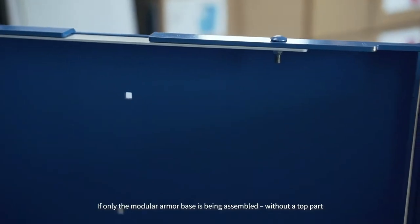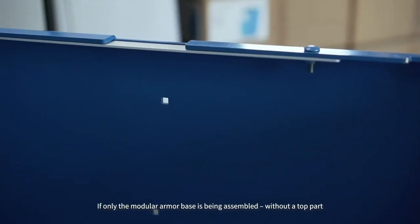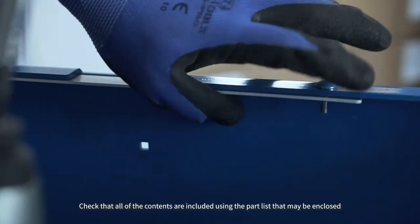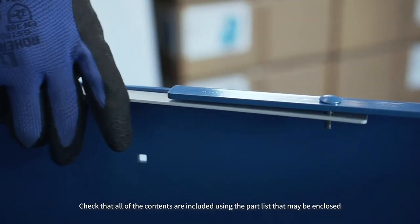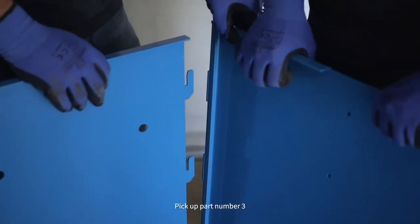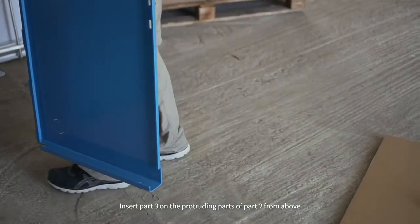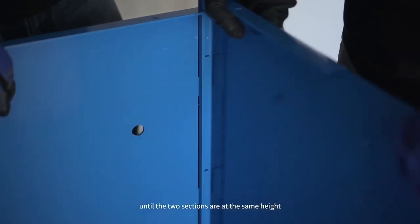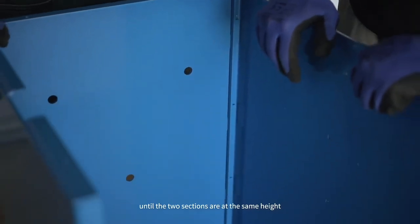If only the modular armor base is being assembled without a top part, a white closure strip should be connected according to step three in the instruction booklet. Pick up part number three. Insert part three on the protruding parts of part two from above, until the two sections are at the same height.